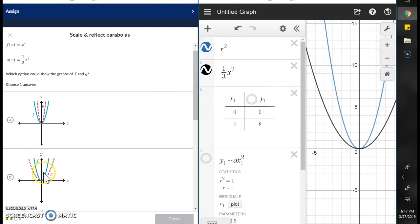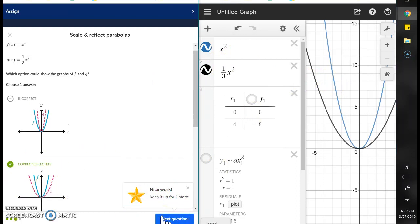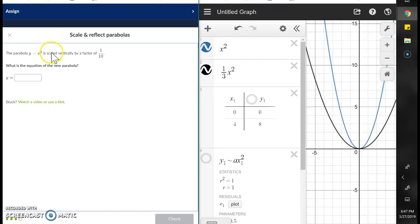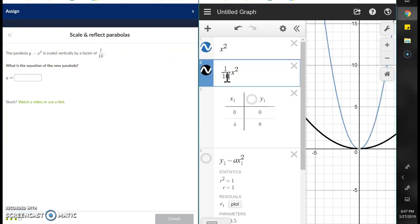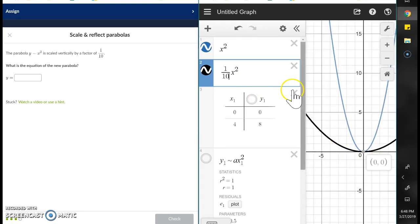Here it says the parabola scaled vertically by one-tenth. Scale means to multiply by one-tenth. You can see how it would look compared to the parent function. One-tenth times x squared.